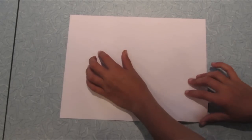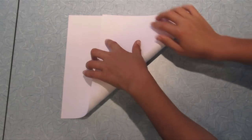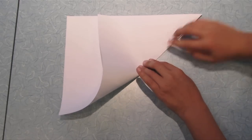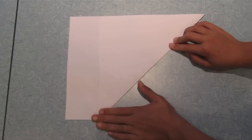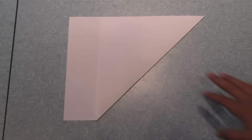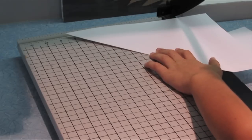The first step you're going to want to do is fold the paper over and make a crease. Next you're going to want to cut it along the crease line to make a perfect square.